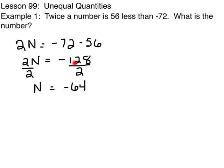2N equals negative 128. To get N by itself, we have to divide by its coefficient. And we'll do that on both sides. When we do, we say that N is equal to negative 64. Isn't that easy?